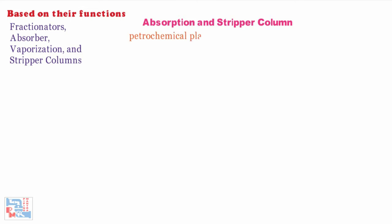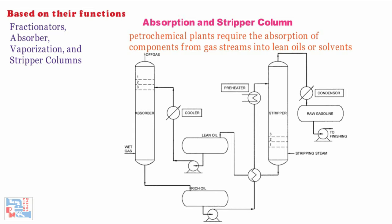Many operations in petrochemical plants require the absorption of components from gas streams into lean oils or solvents. A typical flow diagram of absorption stripping system for hydrocarbon recovery from gaseous mixture is illustrated in figure. The resulting rich oil is then stripped or denuded of the absorbed materials.